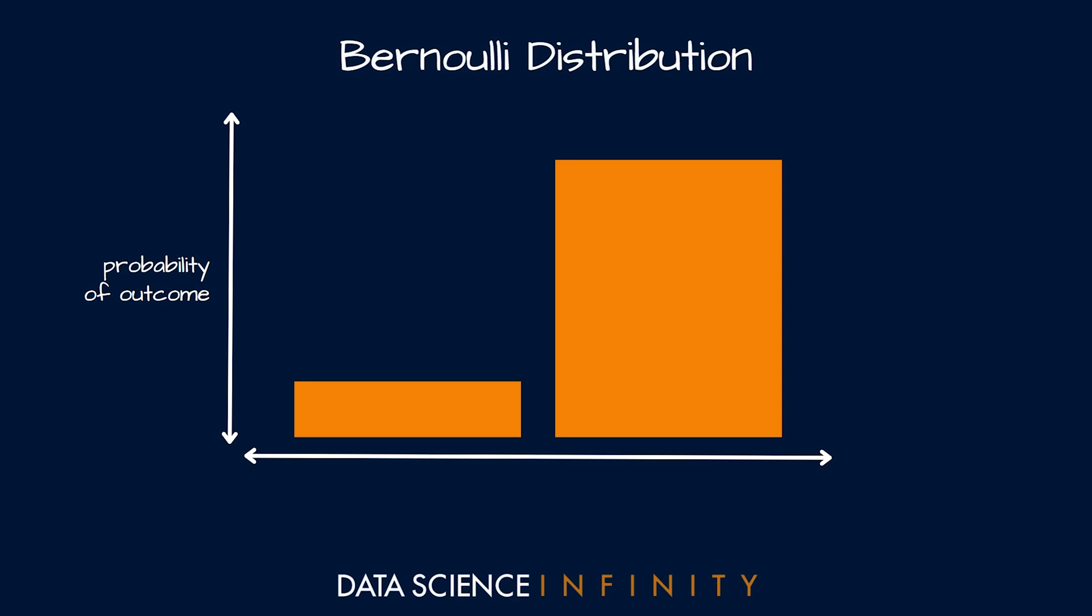On the y-axis to the left you can see that we're still measuring the probability of an outcome, but unlike the binomial distribution here, instead of considering all possible outcomes across the x-axis we're just considering two possible outcomes. So perhaps success or failure, yes or no, or true or false.